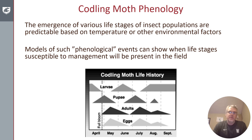The heart of codling moth management relies on understanding its phenology. Phenology is understanding the emergence of various life stages of insect populations, which are predictable based on temperature or other environmental factors. Models of such phenological events can show when life stages susceptible to management are present in the field. We know codling moth overwinter as mature larvae in cocoons and begin to pupate right before the field season starts. After bloom, adults start to emerge, lay eggs, and there are two to three generations per year in Washington, and these stages are highly predictable based on temperature.